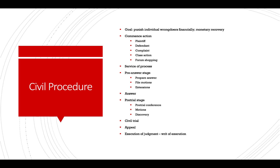After the action is commenced with a complaint, we have service of process — basically everyone who is a party to the suit is informed of the suit, what it's about, the charges, and how to respond. After that, you're in the pre-answer stage, where you can prepare an answer, file motions to dismiss, and file motions to request an extension. Finally, you file the answer to the lawsuit, which will either admit or deny the claims and may also set forth affirmative defenses — meaning even if everything in the complaint is true, the defendant is still not liable because of other factors. After the answer, you're in the pre-trial stage, where you gather evidence through discovery, hold pre-trial conferences, and file motions such as a motion to dismiss or motion for summary judgment.